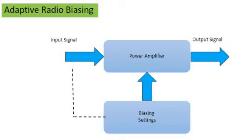Hello all, in this video we will talk about adaptive radio biasing which is used in the RF section of wireless chips. So what is adaptive radio biasing and why is it needed?